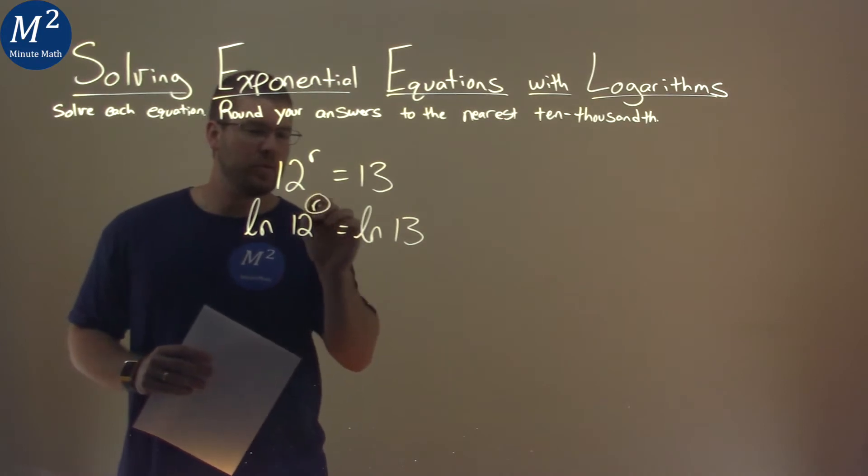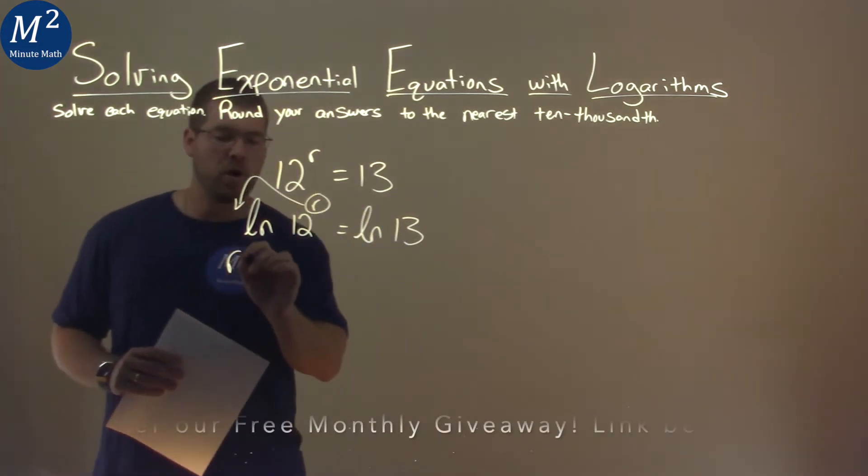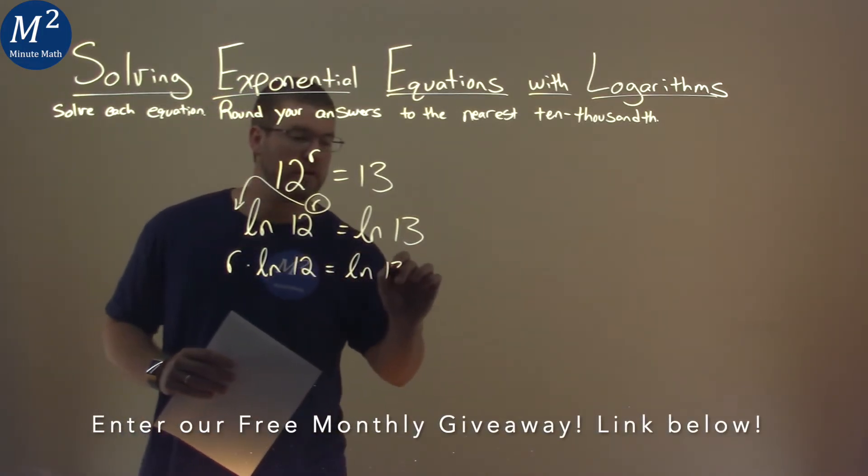When that happens, the exponent r can come out front. So we have r times natural log of 12 equals natural log of 13.